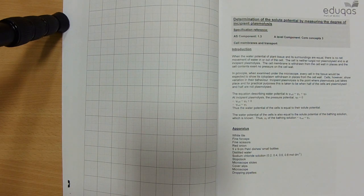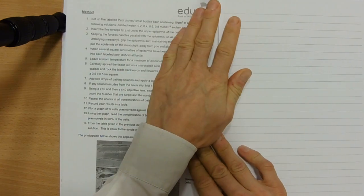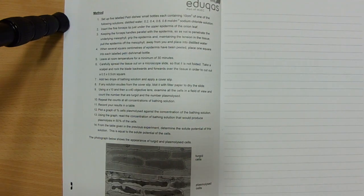So this is a practical determination of solute potential by measuring the degree of incipient plasmolysis. One of the tougher things to really think about, we find for students. And it'd be useful to start off with what do we mean by a few terms.